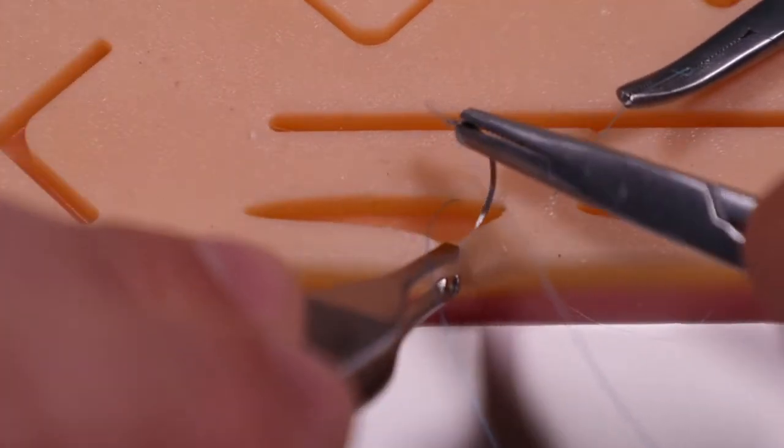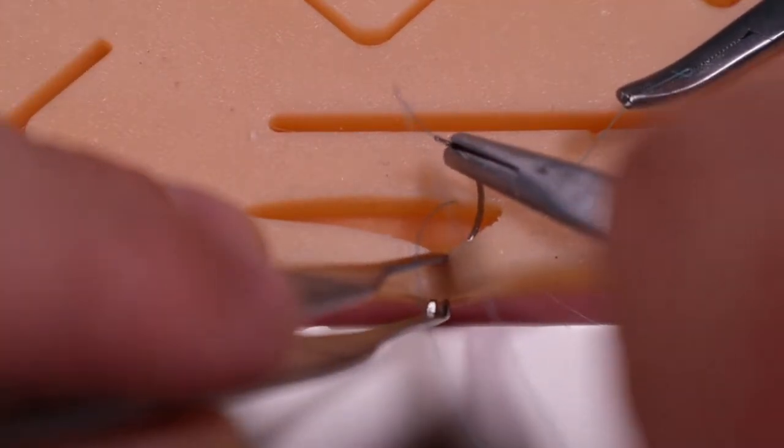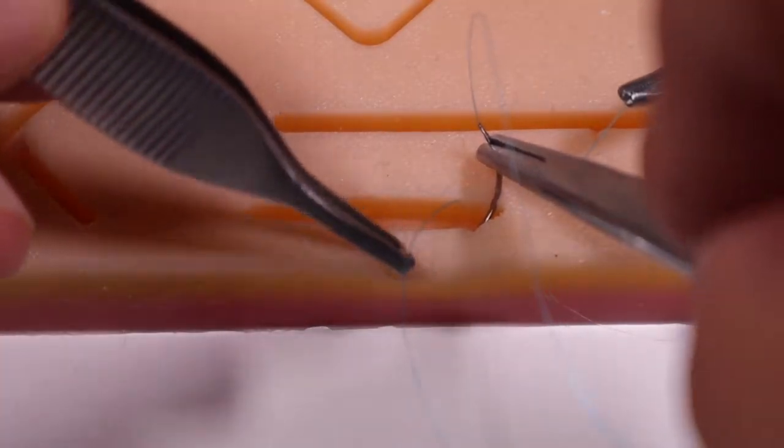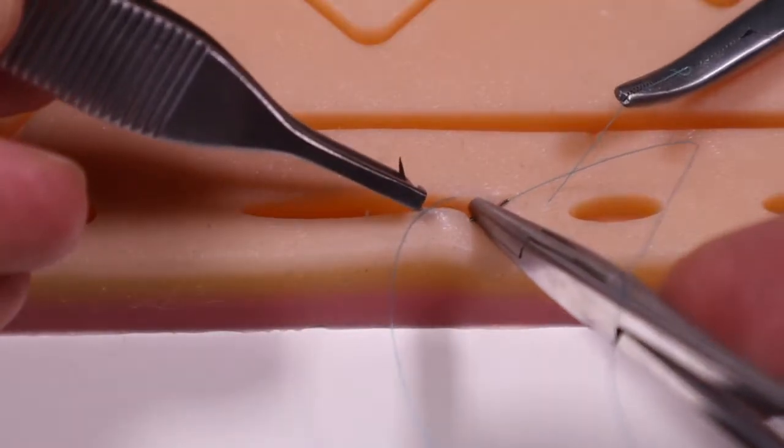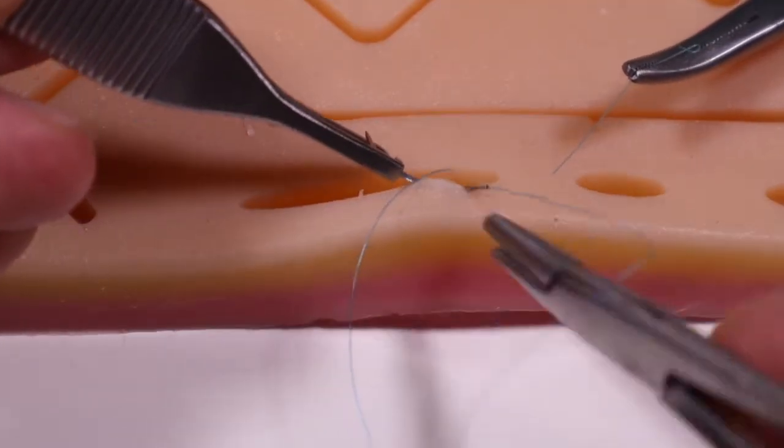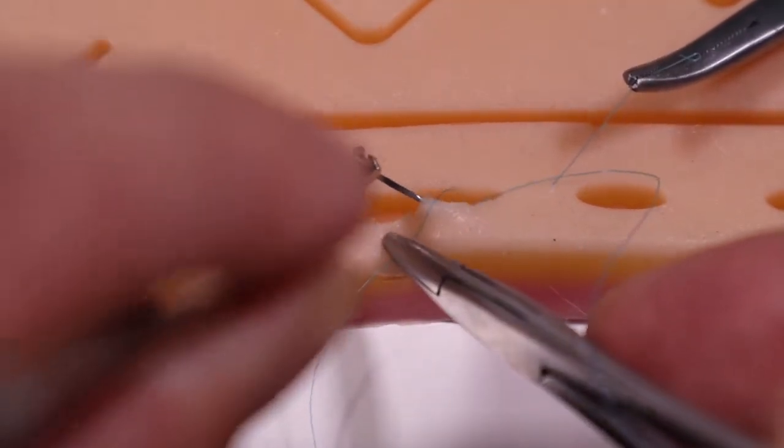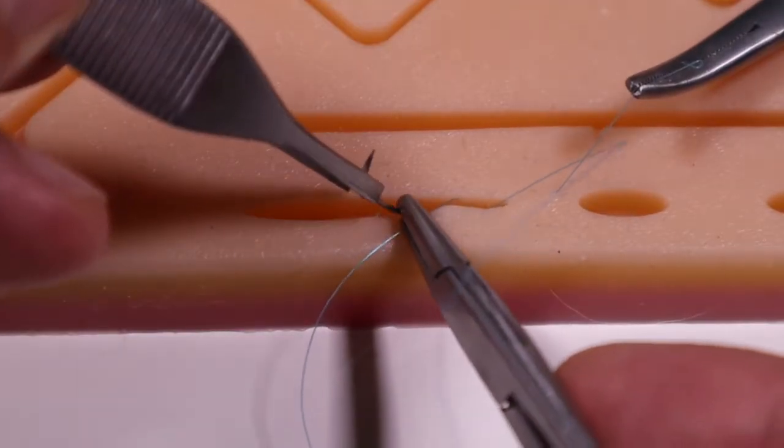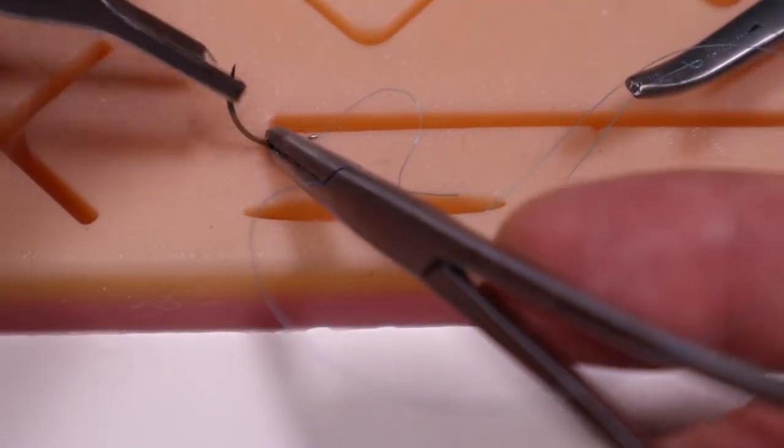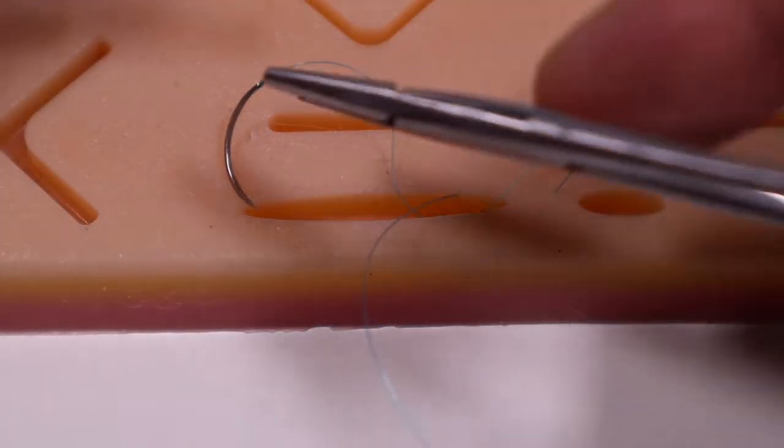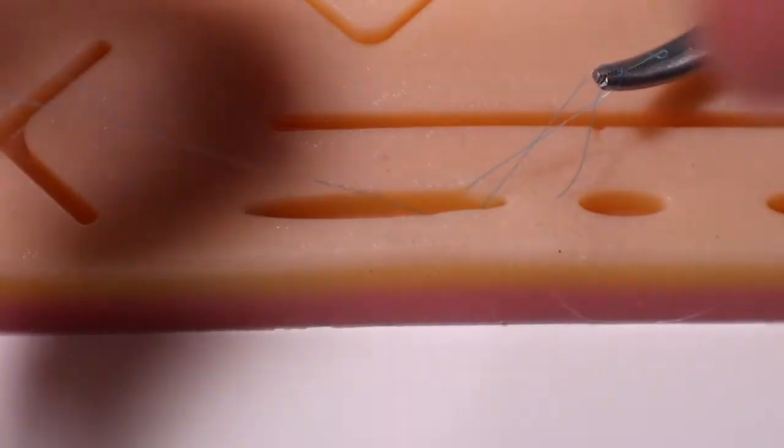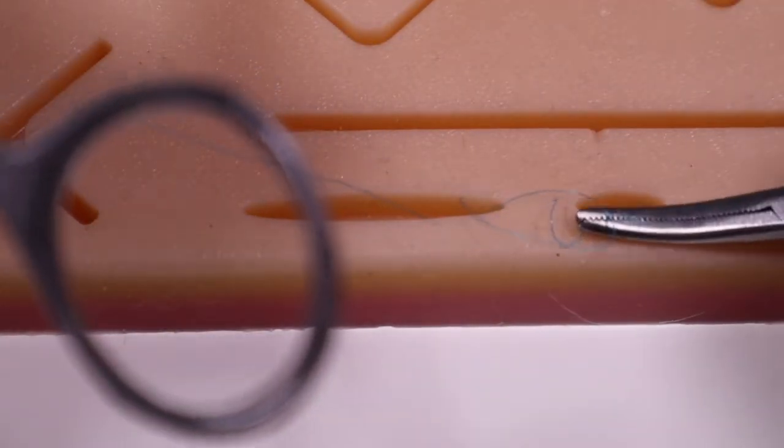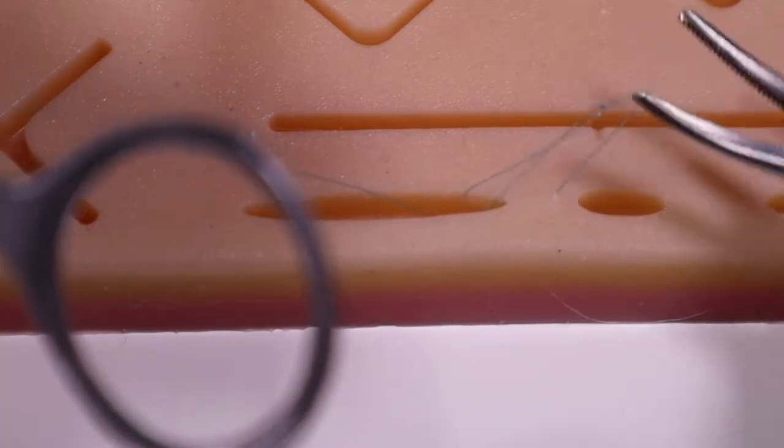We'll evert that skin edge, enter in the subcutaneous layer, rotate that wrist through exiting in the subcutaneous layer. Rotate, grab that needle. And I'll grab my suture, so that got tangled somehow.